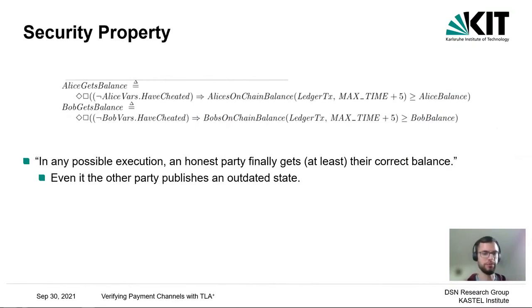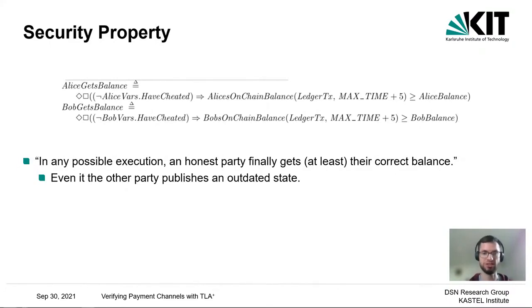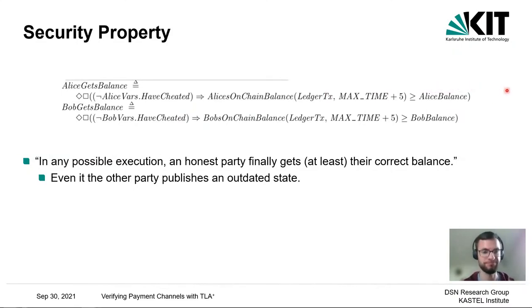Let's look at the security property we specified. Informally, it states that in any possible execution, an honest party finally gets at least their correct balance, even if the other party publishes an outdated state. In TLA+, formulated for Alice and Bob, this means that from some point in time on, if Alice has not cheated, her on-chain balance must be greater than or equal to the balance according to the protocol. This high-level specification implies the two properties shown earlier.